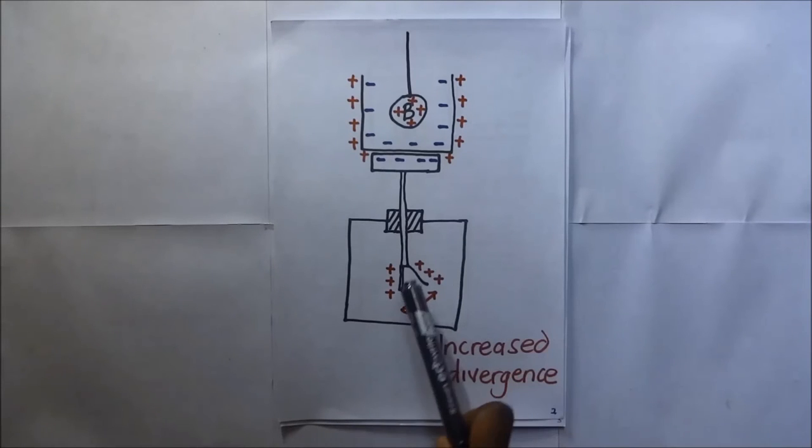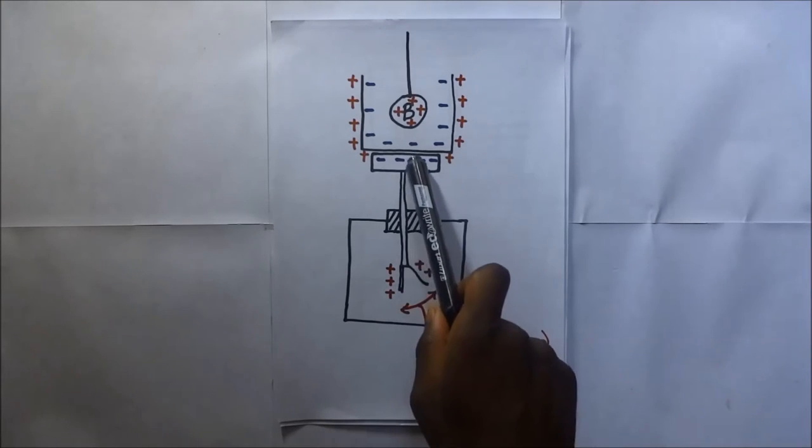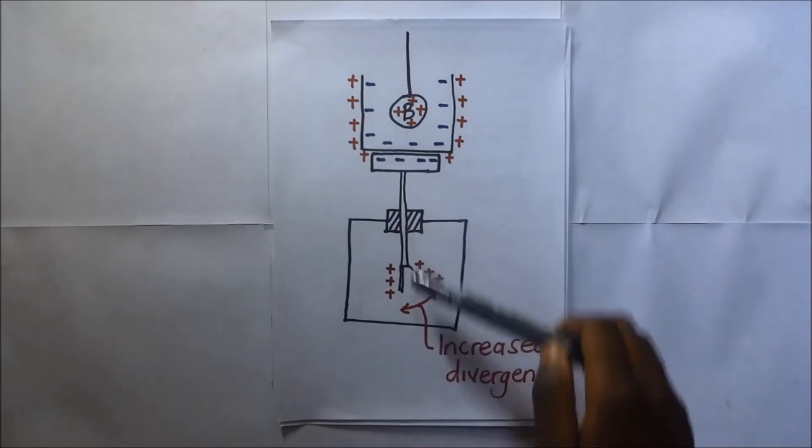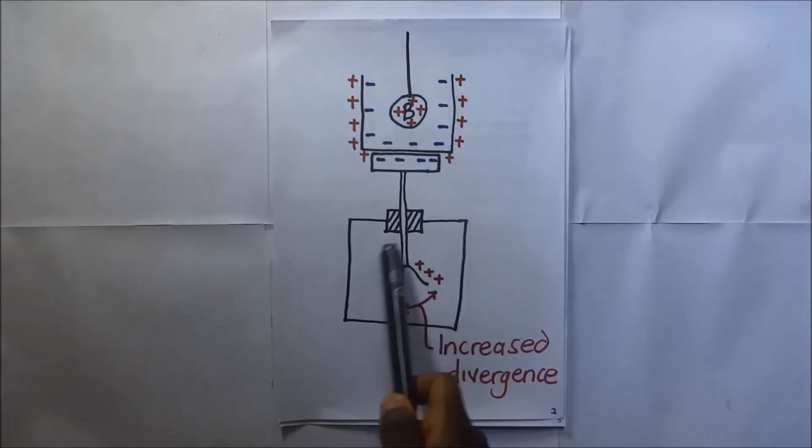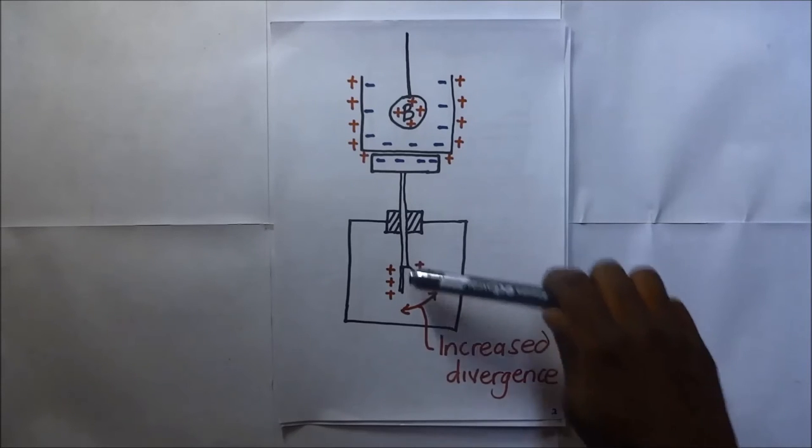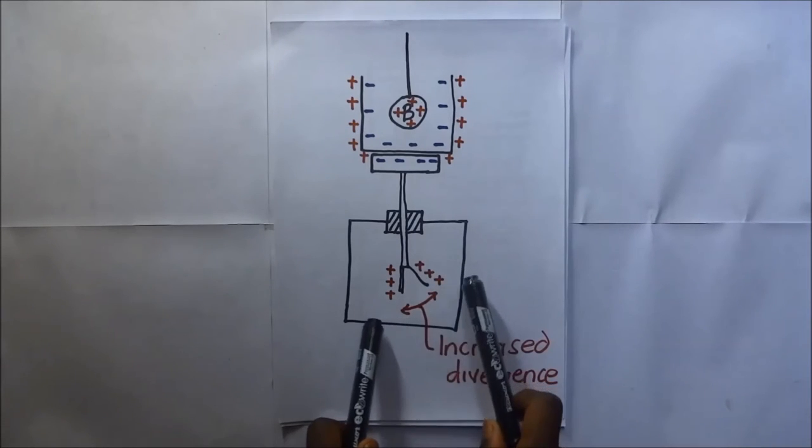Since electrons have been attracted or negative charges have been attracted up there, it means that you're going to have more positive charges down here. And so because you're having more positive charges on the brass plate and at the gold leaf, this divergence will increase further.